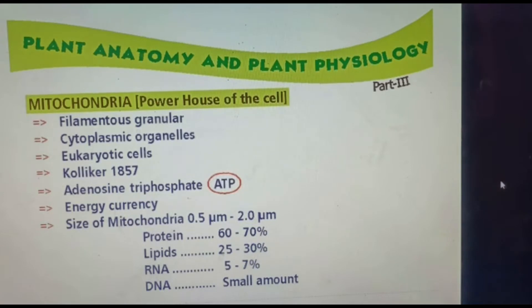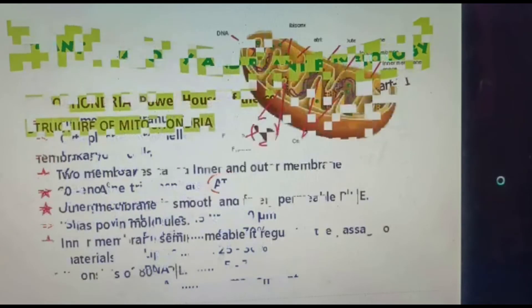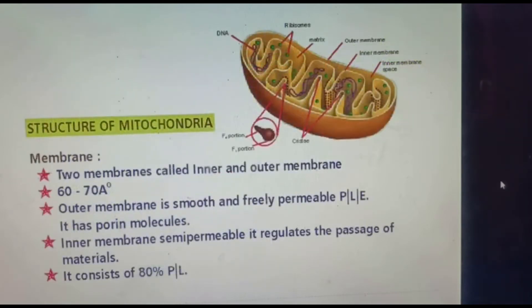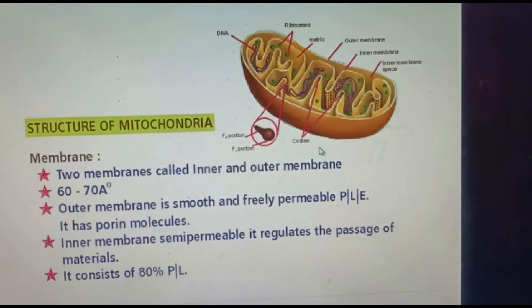Next, the structure of mitochondria. See the diagram — this is the mitochondria. It has a membrane structure with inner and outer membranes.